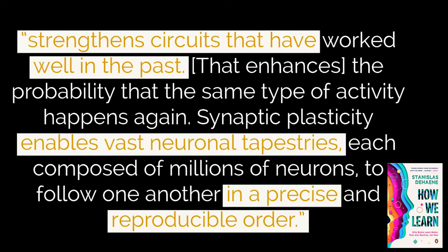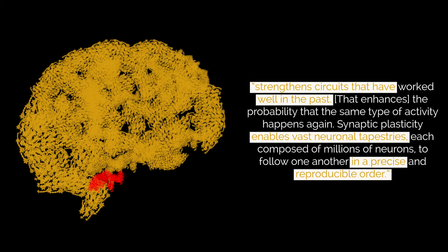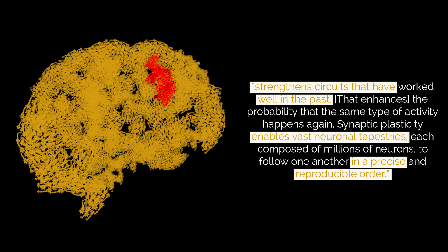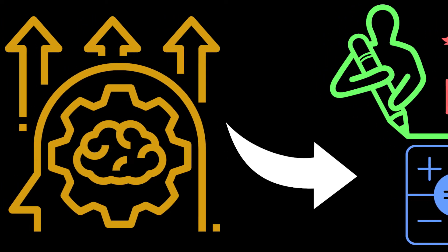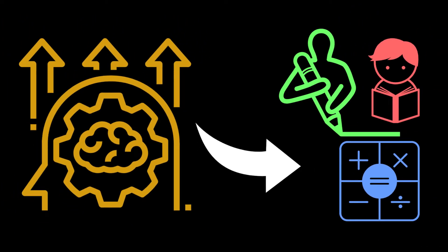That enhances the probability that the same type of activity happens again. Synaptic plasticity enables vast neuronal tapestries, each composed of millions of neurons, to follow one another in a precise and reproducible order. This applies not only to motor skills but to learning of all kinds. Reading, writing, and mathematics are all acquired through practice, which leads to similar brain changes.